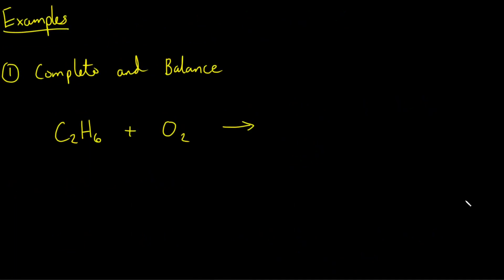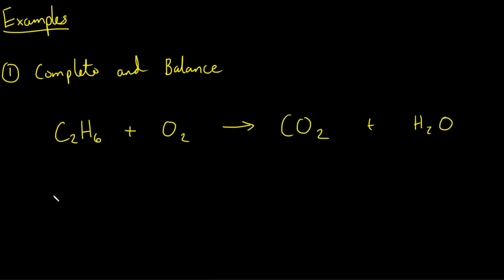Let's bring everything together and look at a couple of examples. We'd be expected to complete this chemical equation and then balance it. We've got the hydrocarbon ethane reacting with oxygen — it must be a combustion reaction. The products for complete combustion are carbon dioxide and water, CO2 and H2O. However, the equation is not balanced: there are two carbons on the left but only one on the right, six hydrogens versus two, and two oxygens versus three.